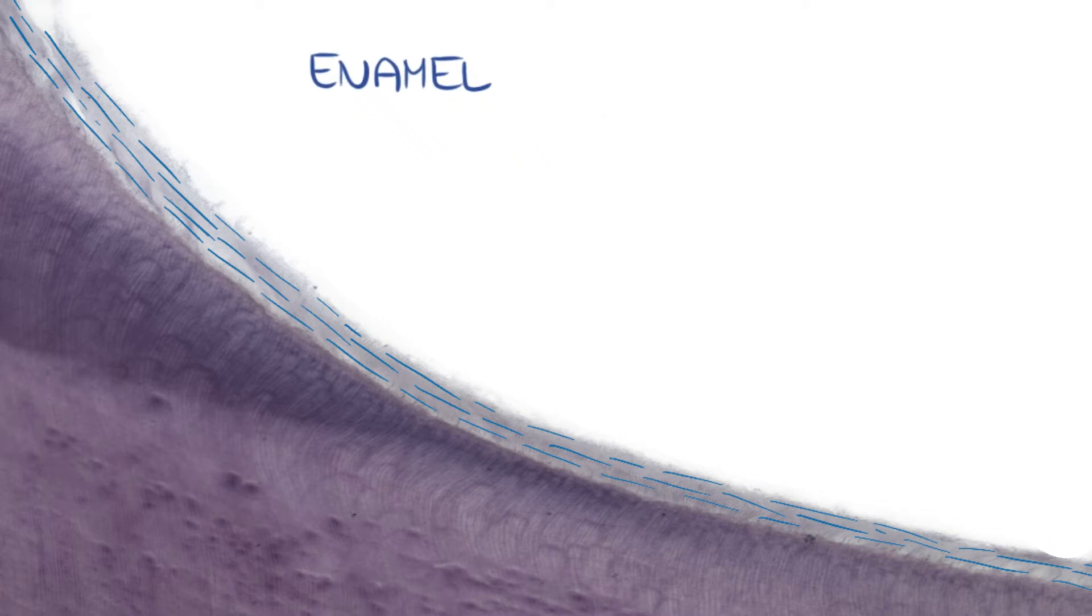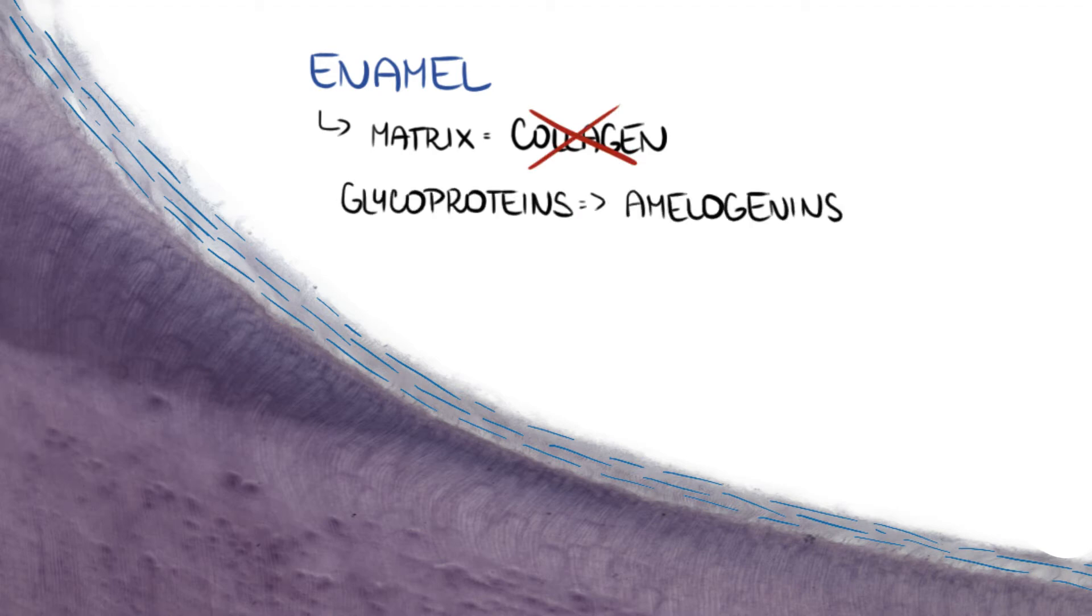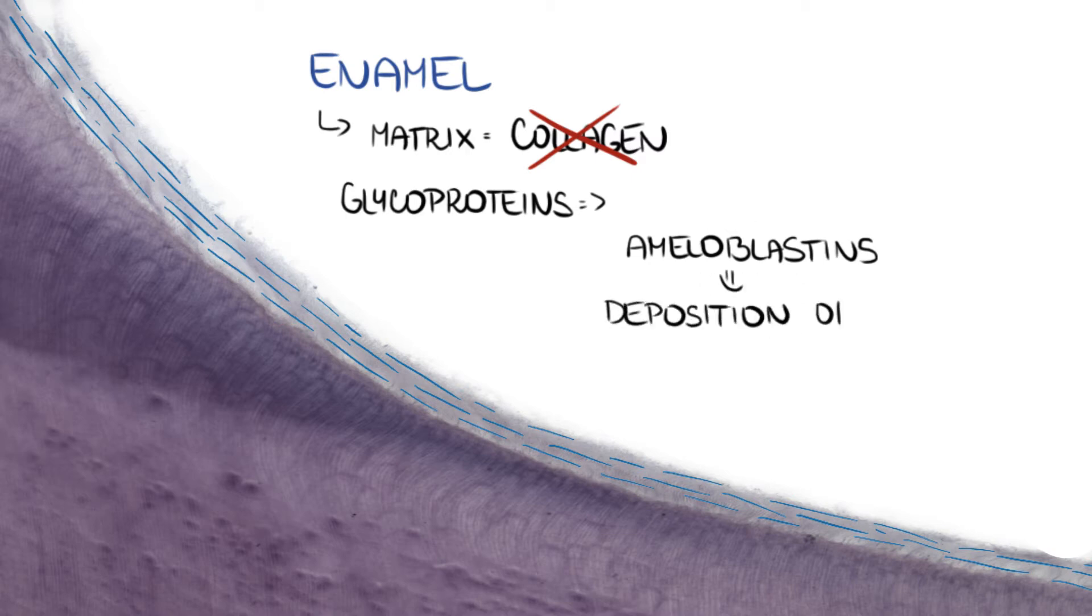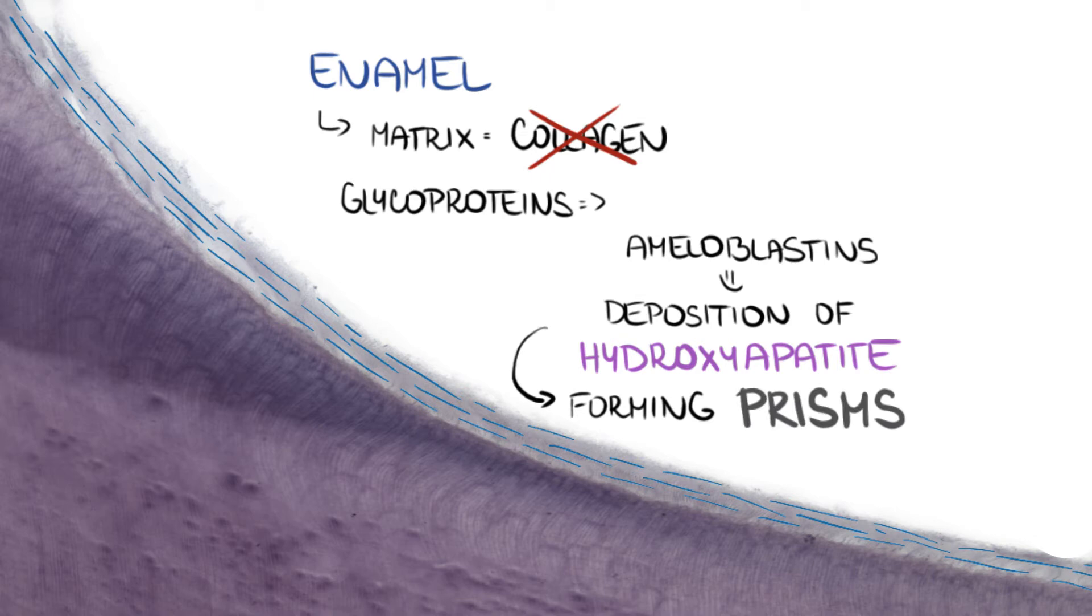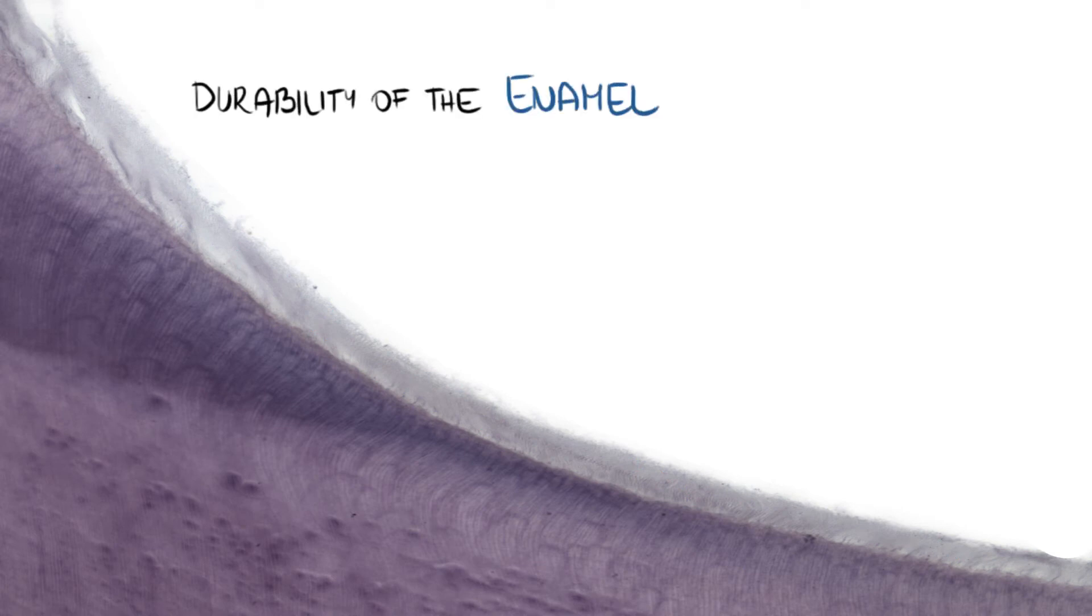Matrix of enamel doesn't contain collagen. There are glycoproteins called amelogenin, ameloblastins, enamelins, and tuftelins. Ameloblastins ensure deposition of hydroxyapatite crystals, forming irregular cuboidal structures called prisms. They can be seen in electron microscopy and, in case of non-decalcified samples, also in light microscopy.